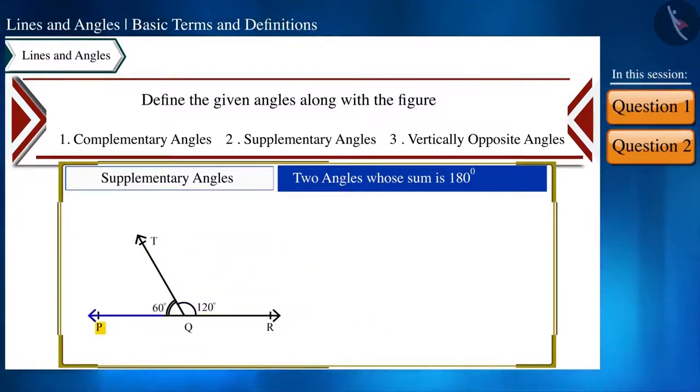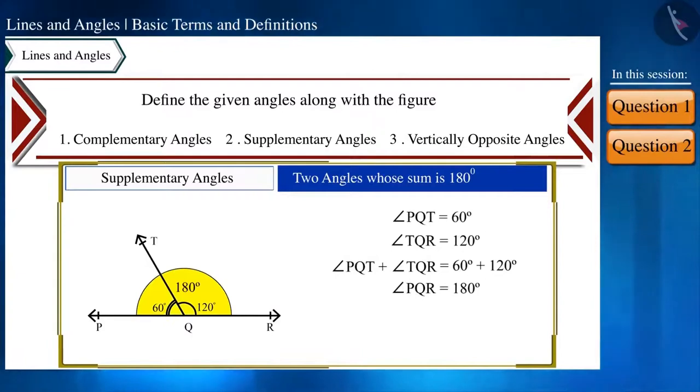Look at the figure. In angle PQR, the measure of angle PQT is 60 degrees and the measure of angle TQR is 120 degrees. On adding the two, we get 180 degrees. So, we can say that angle PQT and angle TQR are supplementary angles.